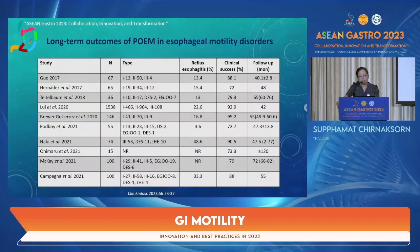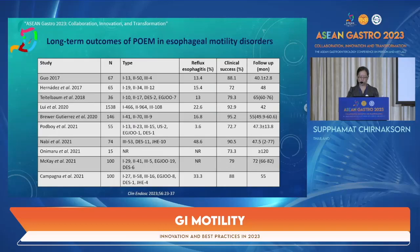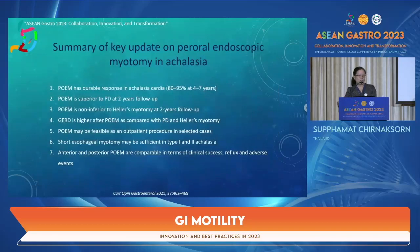POEM has been compared to other modalities. We can see the long-term outcome of POEM in achalasia and other types of esophageal motility disorders such as EGJ outflow obstruction. The clinical success rate is over 70% long-term, but the most common adverse event is reflux esophagitis, occurring in up to 50% of cases. Key updates show POEM has durable response in achalasia cardia and is superior to pneumatic dilation and non-inferior to Heller myotomy at two-year follow-up, though GERD is higher after POEM.